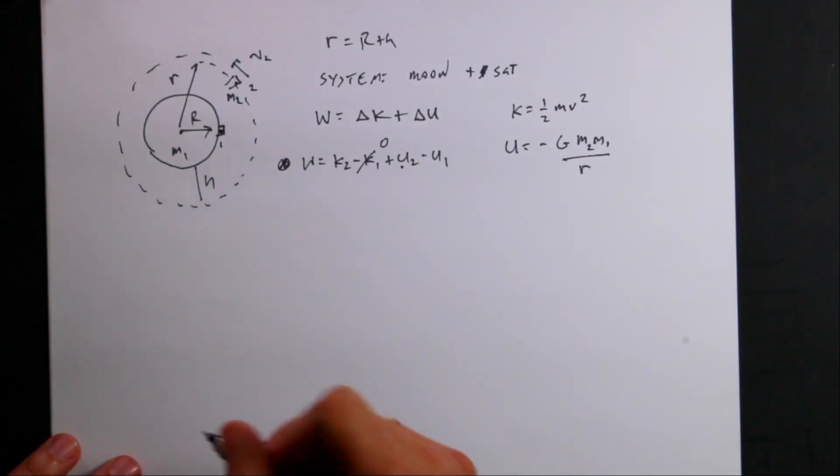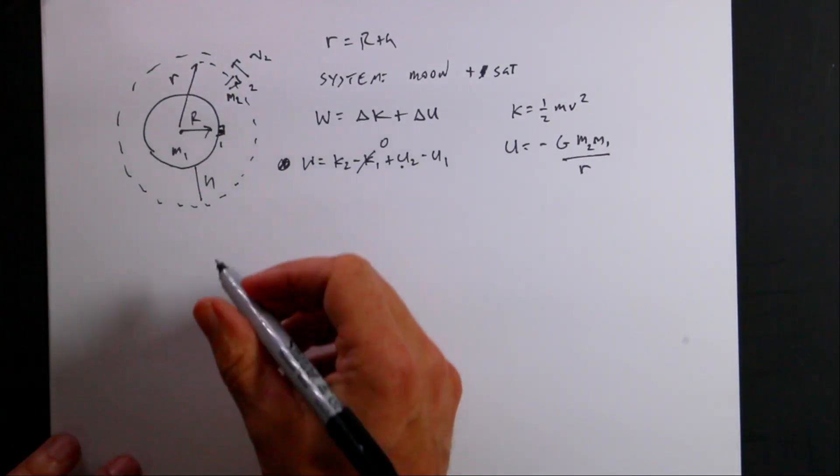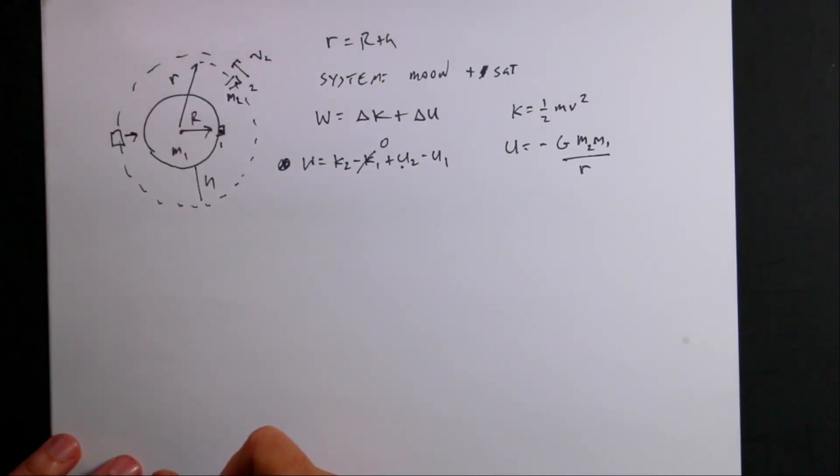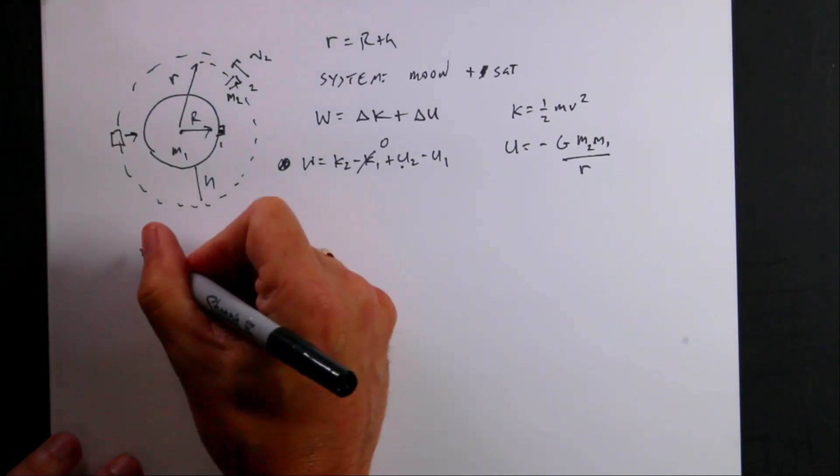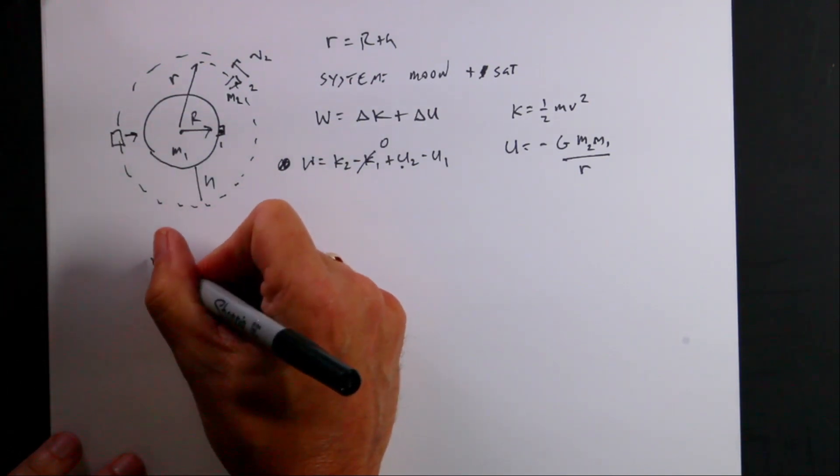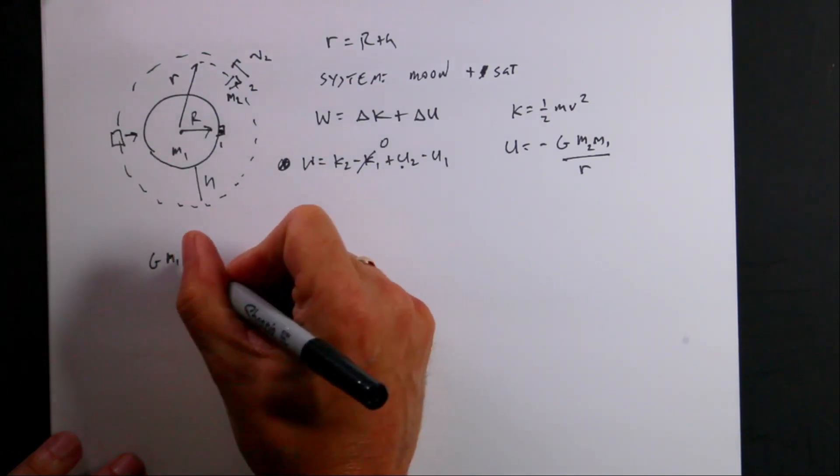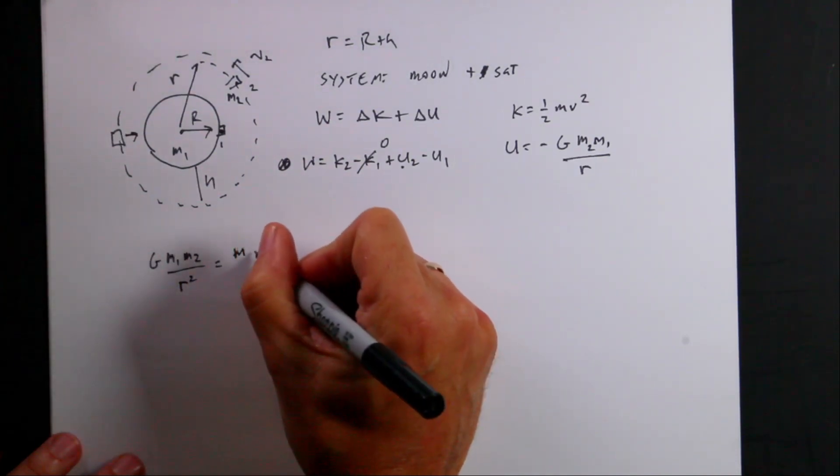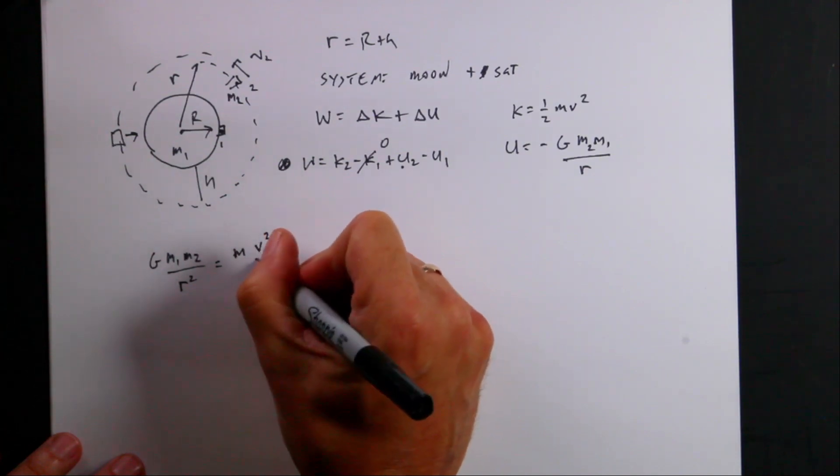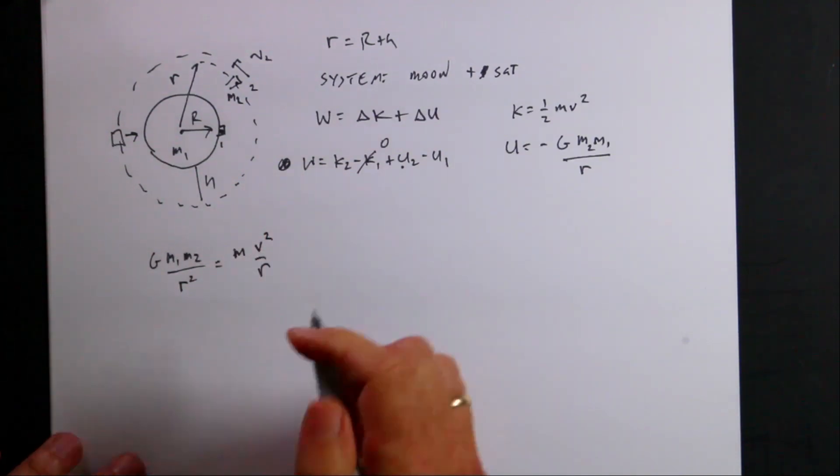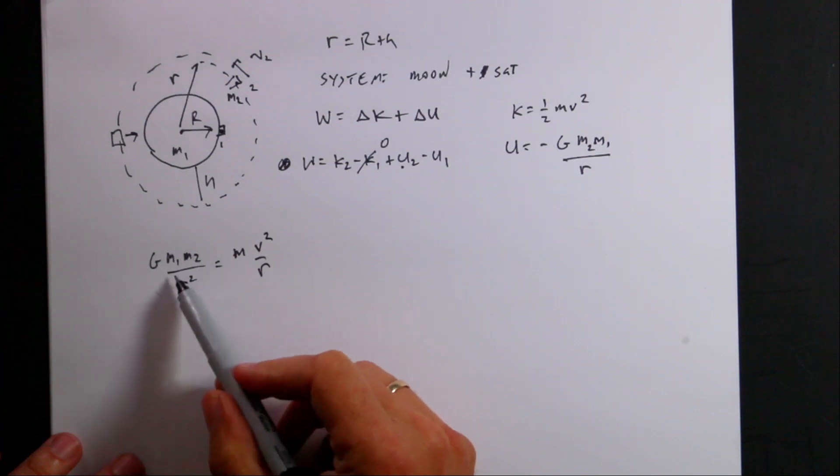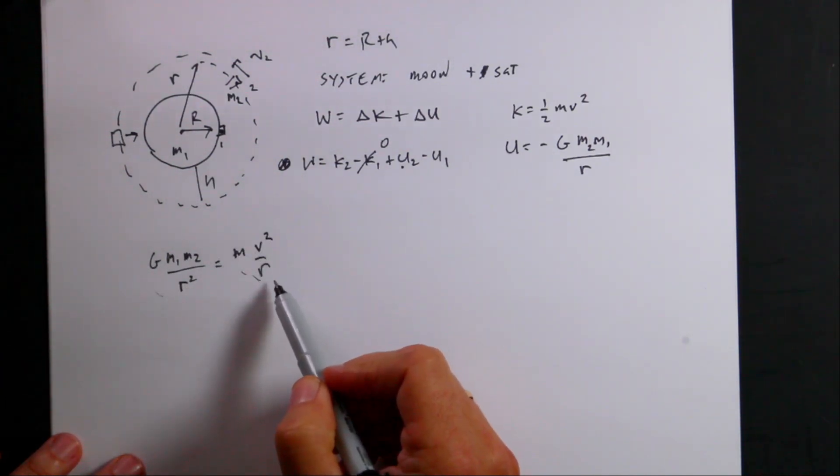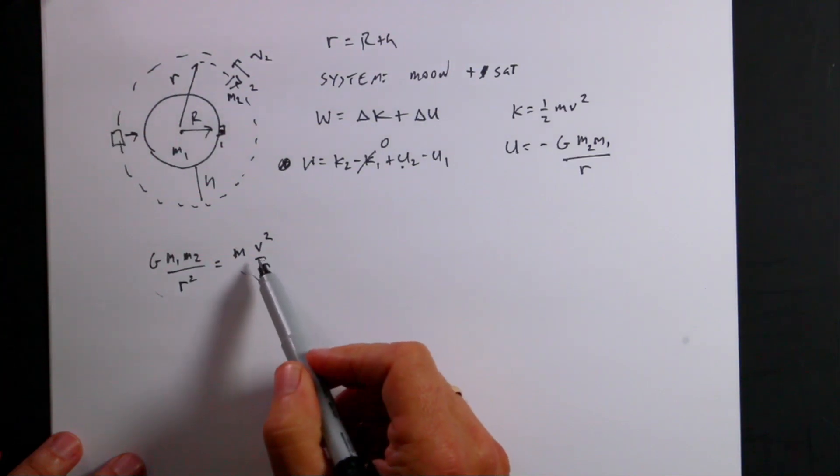So we have to kind of do a non-work energy problem there. Let's say that here's my spacecraft and I have a gravitational force pulling it towards the center. That gravitational force, the magnitude of it will be g m1 m2 over r squared. And that's going to be equal to mv squared over r. So in this case, this is the force, and this is mass times acceleration, and this is the centripetal acceleration is v squared over r. So from this, I can solve for the velocity.